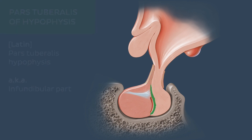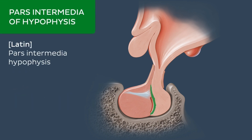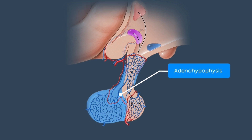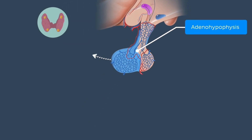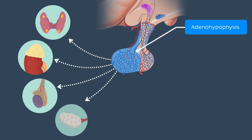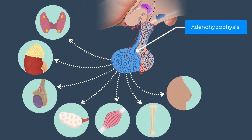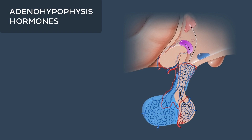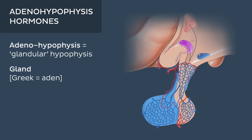Lastly is the pars intermedia, a thin epithelial layer and avascular zone which borders the posterior lobe. The adenohypophysis produces and secretes several different endocrine hormones, which it releases into the bloodstream to act on target cells and perform various functions around the body. This glandular function is why it has the name adenohypophysis.